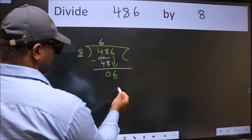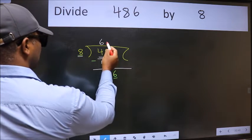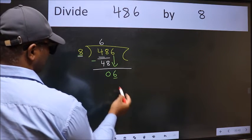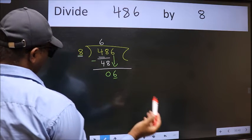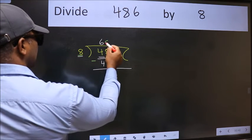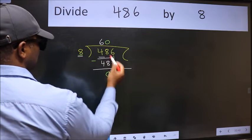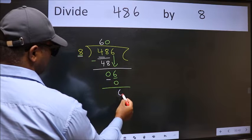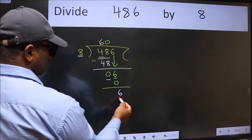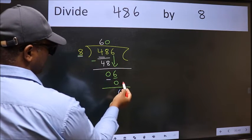which number should we take here? If I take 1, we will get 8, but 8 is larger than 6. So what we do is we take 0. So 8 into 0 is 0. Now we subtract. We get 6. Over here, we did not bring any number down.